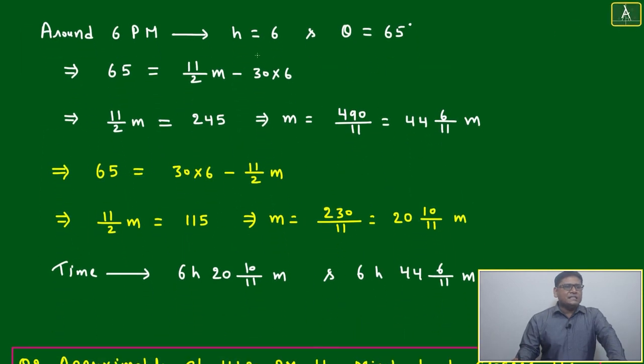Around 6 PM, h = 6 and θ = 65°. So 65 = (11/2)m - 30×6. Solving, (11/2)m = 245, which gives m = 490/11 = 44 6/11 minutes. Another case occurs when the minute hand is on the opposite side, meaning before the hour hand.